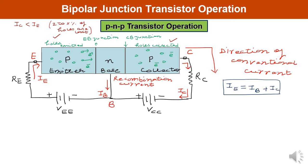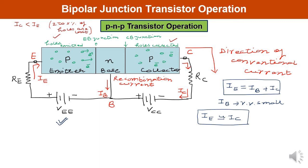In both NPN and PNP transistors, the emitter-base junction must be forward biased — this controls the collector and emitter current. Since IB is very small because of thin and light doping, it can be neglected, meaning the emitter current is approximately equal to the collector current. Remember these approximations when solving numerical questions.